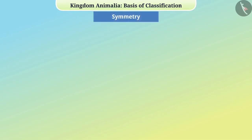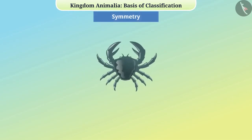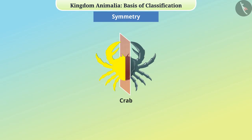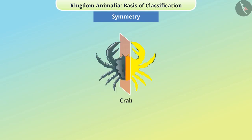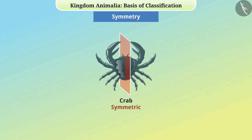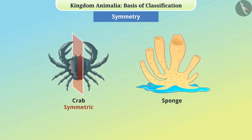Some animals, such as the crab, can be divided into two parts in a plane such that the two parts are exactly like each other — we say such animals are symmetric. Some animals, like sponges, are asymmetric.